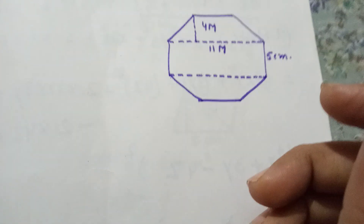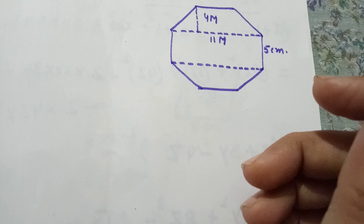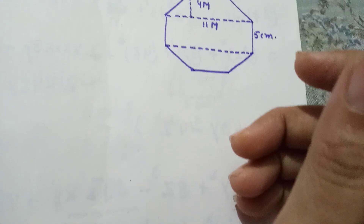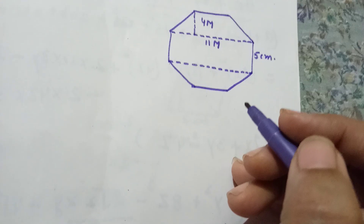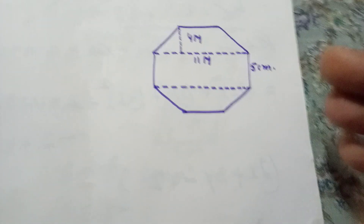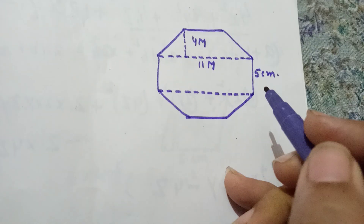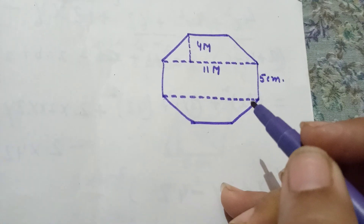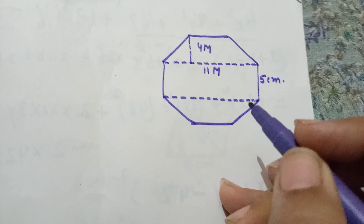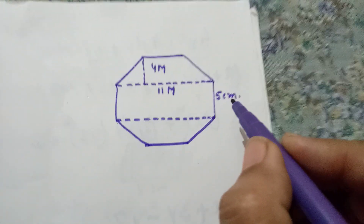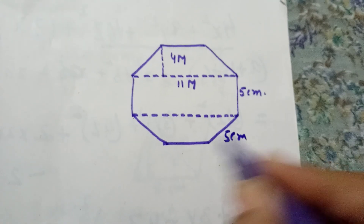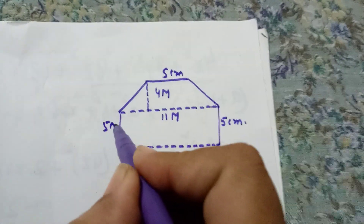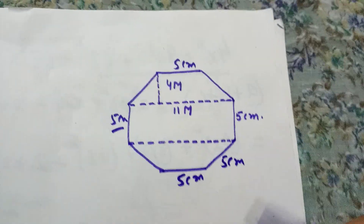Our next question is question number 9. The top surface of a raised platform is in the shape of a regular octagon as shown in the figure. We have to find the area of this octagonal surface. An octagon is a figure having eight sides, and since it is a regular octagon, all sides are equal. One side is given as 5 centimeters, which means all sides will be 5 centimeters.